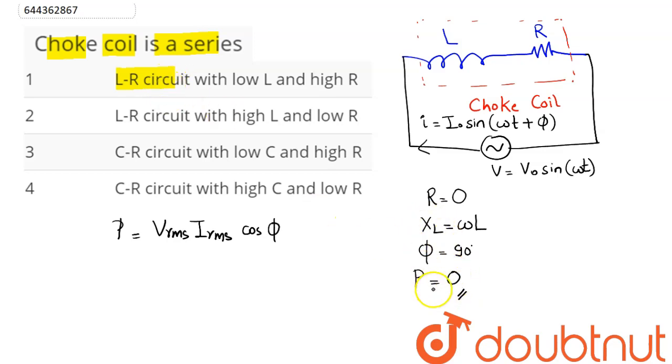So we can see here this is a LR circuit with high inductance and low resistance. So option number two is the correct answer. Hence two is our answer.